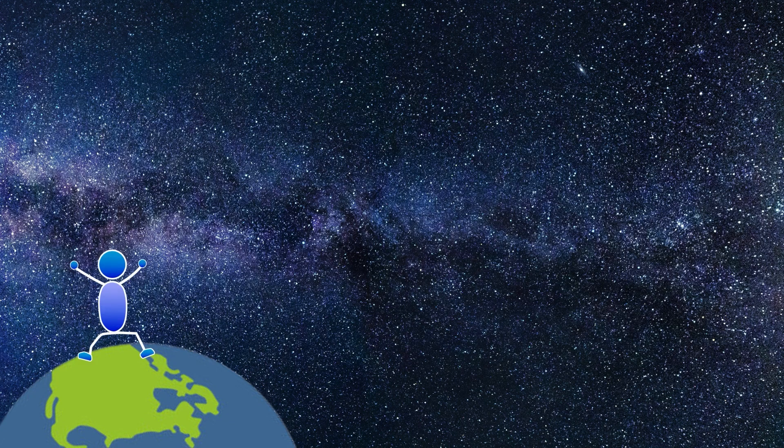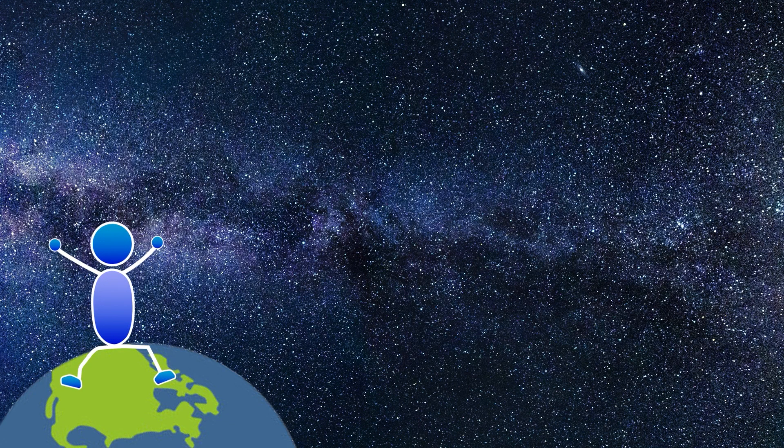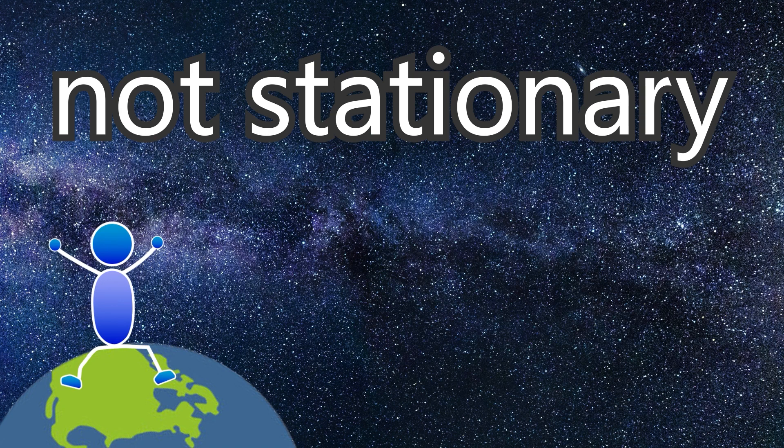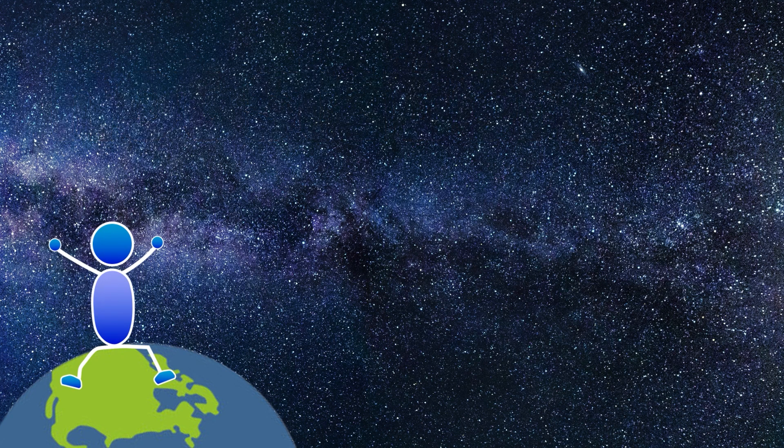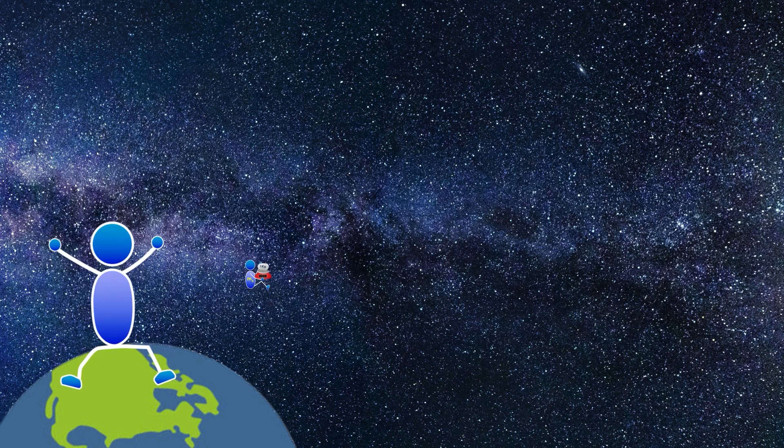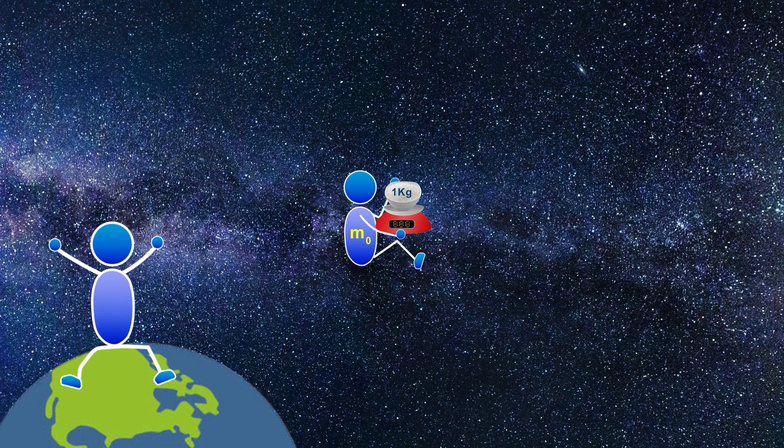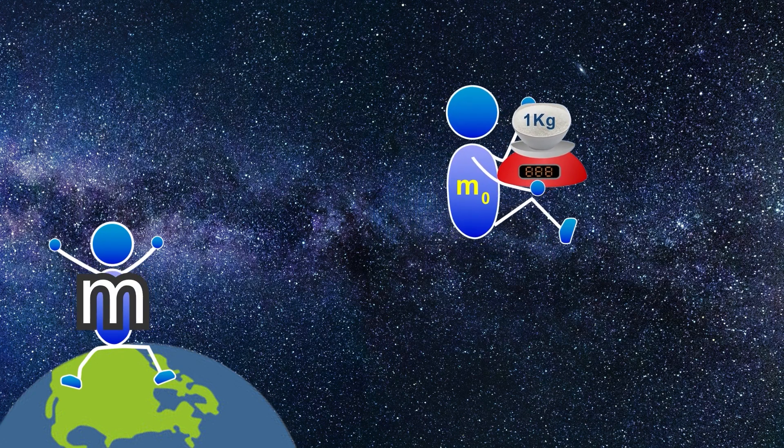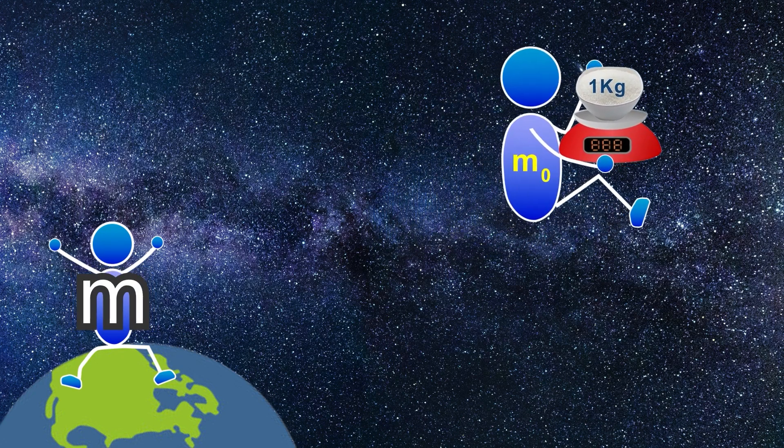So you might think, well, that's me standing in the lab, I'm stationary. No, you're not, the Earth is moving. So proper mass is measured in the frame that is stationary to the mass itself. In other words, to measure proper mass, imagine yourself sitting on the one kilogram zooming along with a pair of scales in your hand measuring the mass of that one kilogram. So the proper mass is measured in the stationary frame of reference relative to the mass.